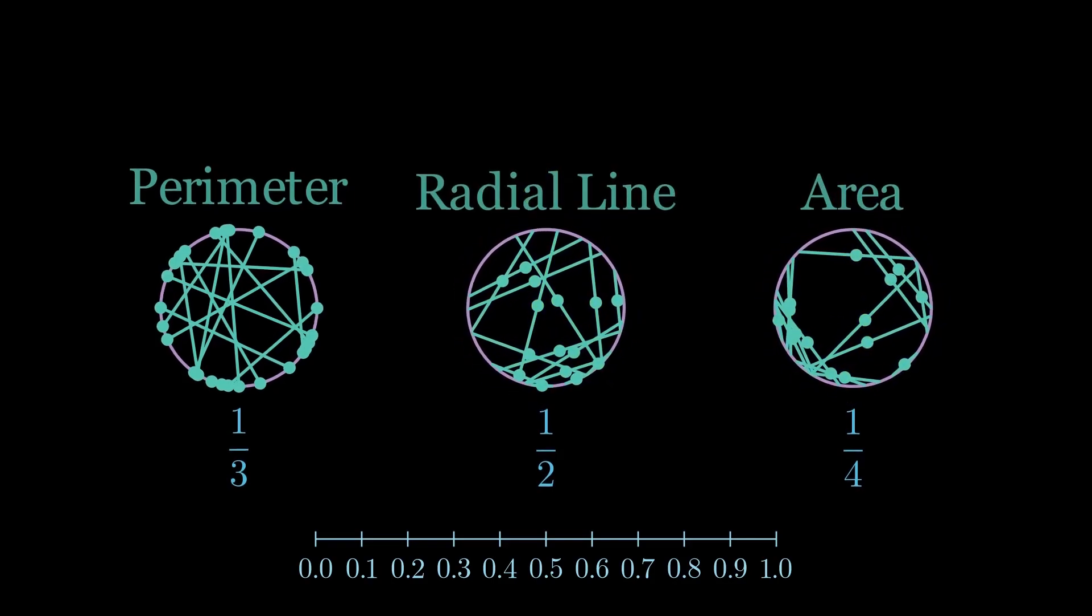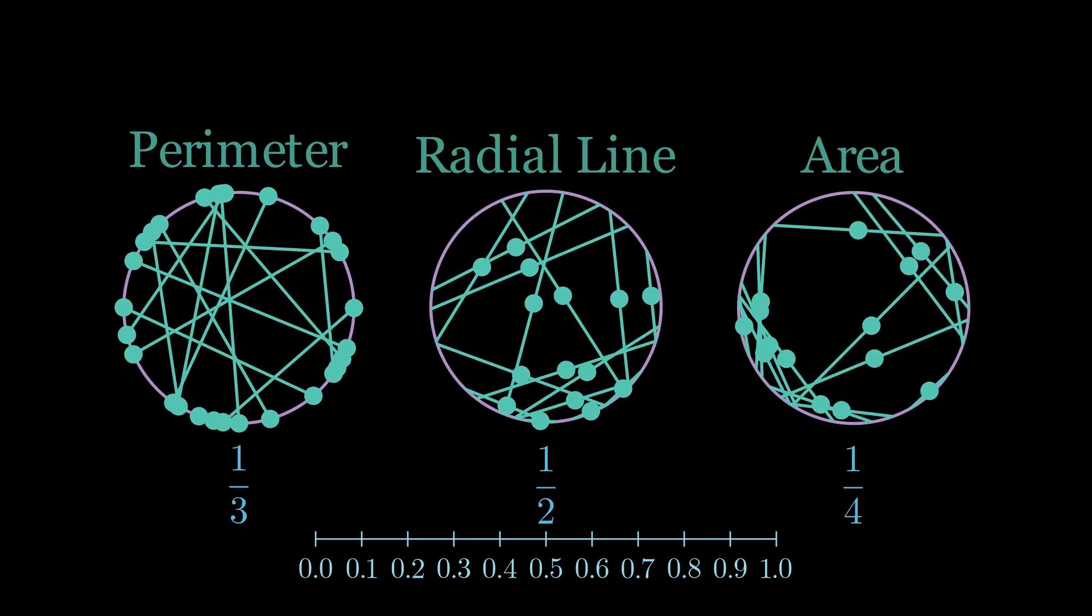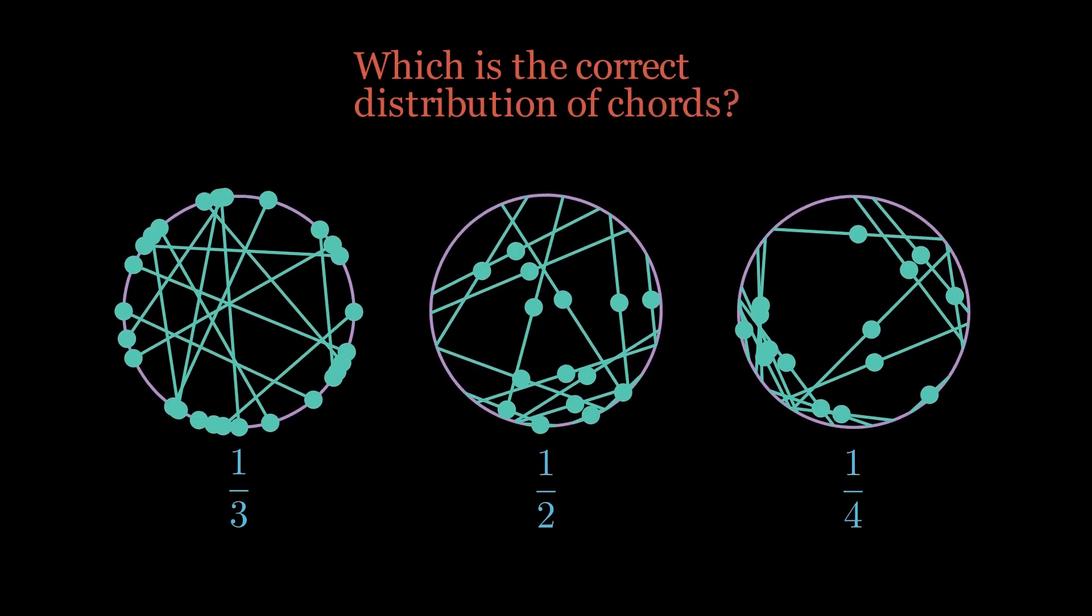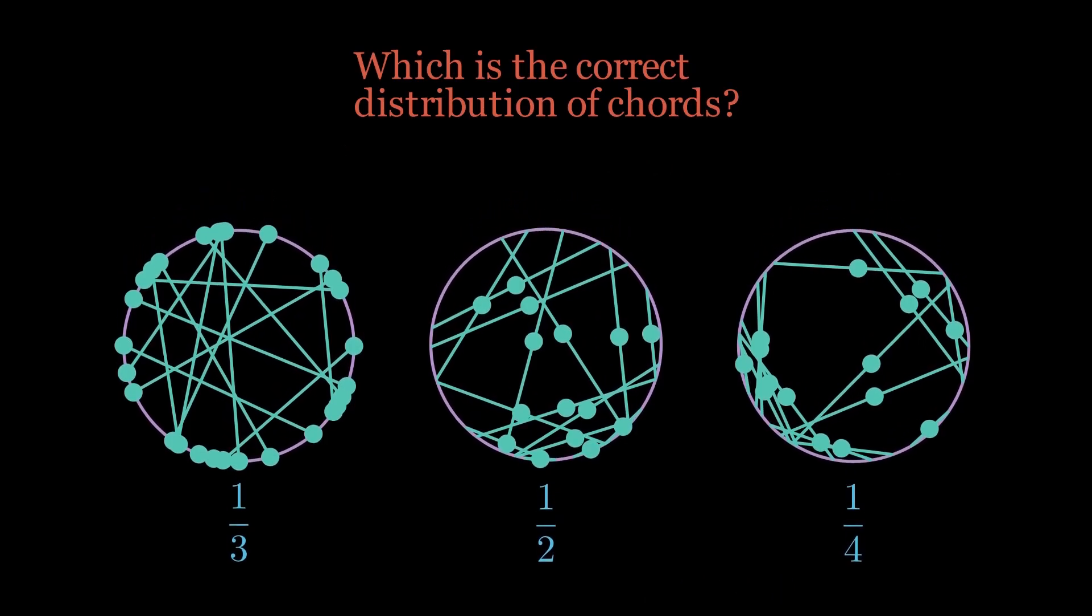Remember this, as it will be useful for determining which of these methods should be preferred. But for now, the main idea is that the distribution of chords matters, and the only thing that differed between the methods is how we generated chords. In the first, we generated them through randomly selecting points on the perimeter, in the second, midpoints on a radial line, and in the third, midpoints on an area. All of these will produce every single possible chord, but with different weights, which owes to their different results.